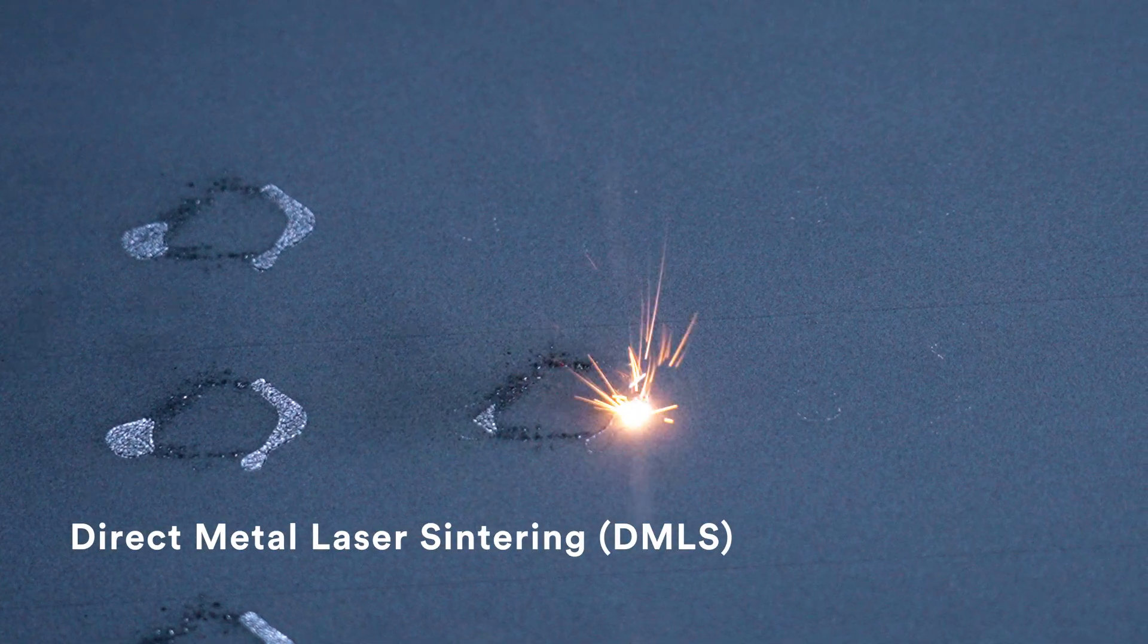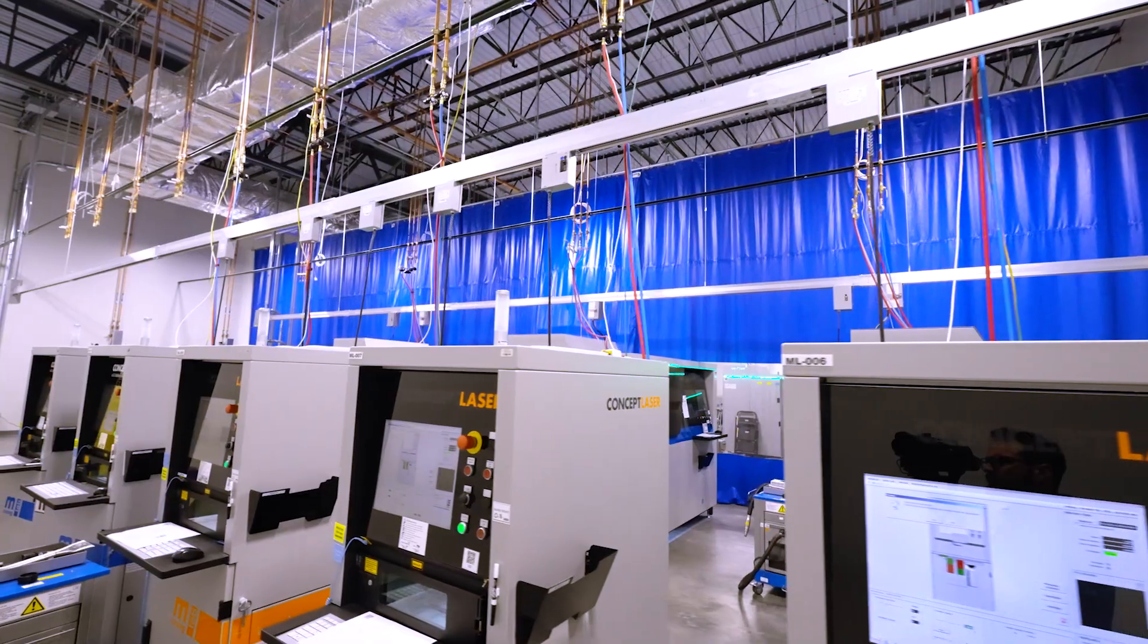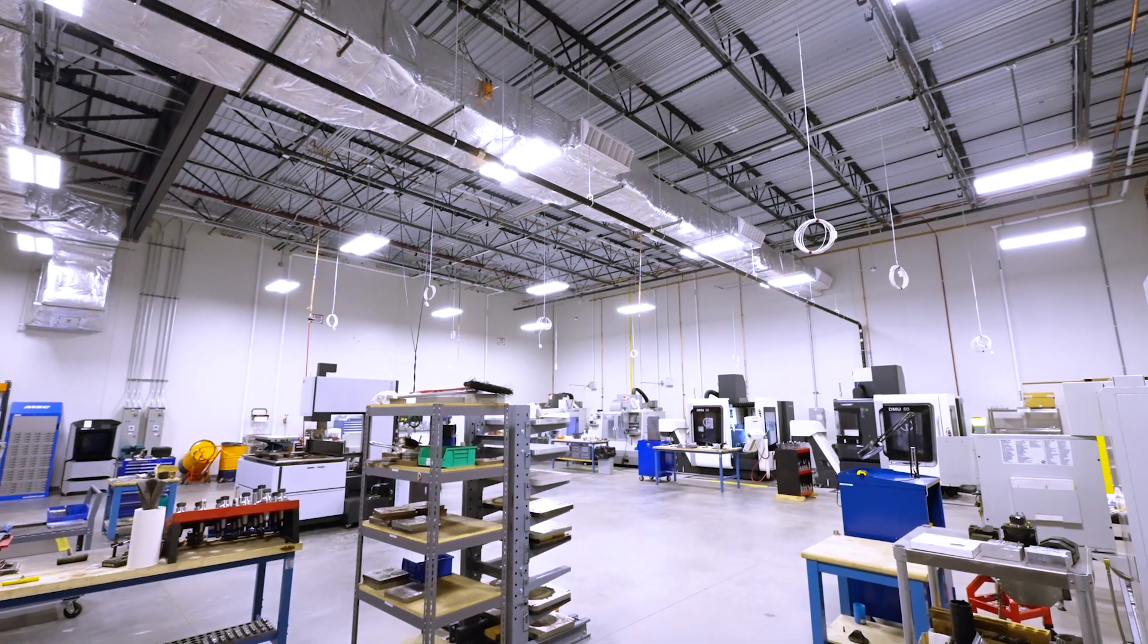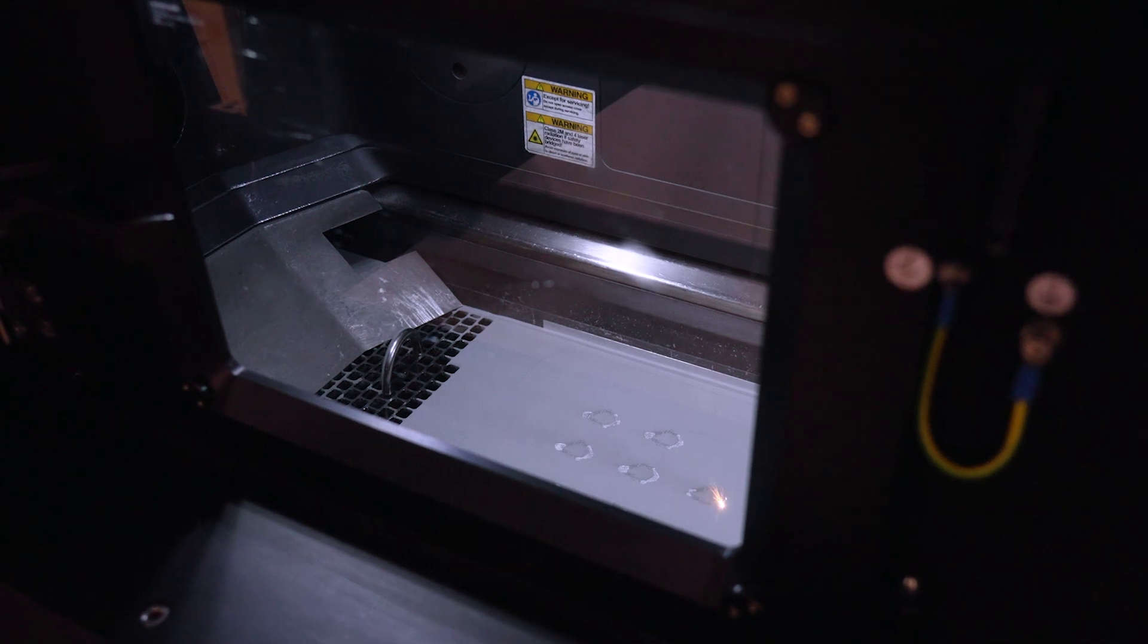For metal 3D printing, or DMLS, we use Concept Laser MLAB and M2 machines to 3D print parts in aluminum, stainless steel, titanium, cobalt chrome, and Inconel.